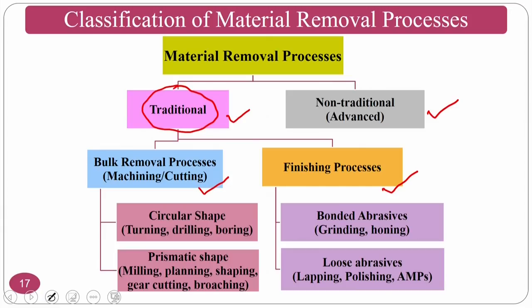In finishing processes, material removal may not be the main criteria — the final product of required quality specified by the customer is majorly important. Turning, drilling, boring, milling, planing, gear cutting, and broaching are all bulk removal processes. Grinding is nowadays considered bulk removal as well due to advanced machining processes, though in conventional machining it is still treated as a finishing process. Lapping, polishing, super polishing, and advanced finishing processes like abrasive flow finishing and magnetorheological finishing are loose abrasive particle-based finishing processes.